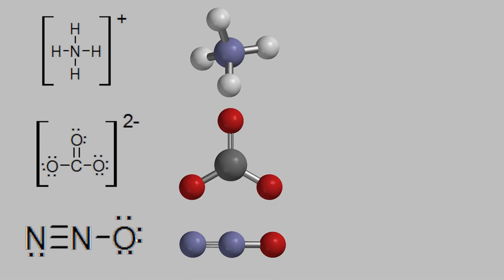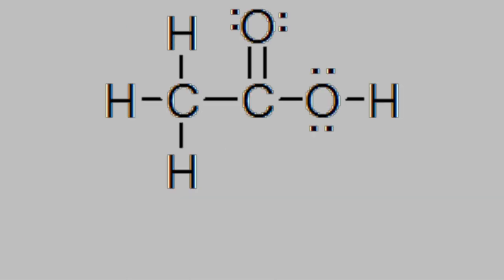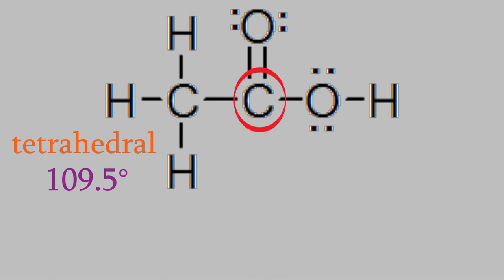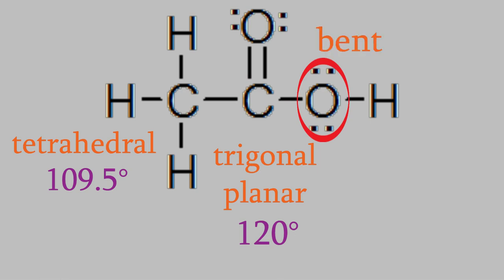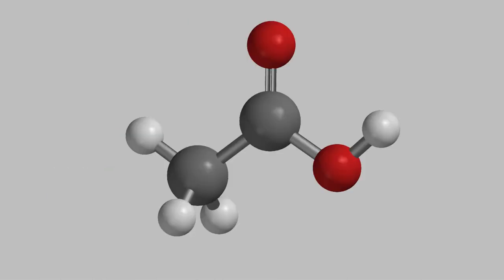We can use this to find the shapes of even larger molecules. For example, here's the Lewis structure of acetic acid. The molecule doesn't have a single central atom, but we can figure out the bond angles and shapes of every atom in the center of the molecule. This carbon has four bonds and no electron pairs, so the bonds are in a tetrahedral shape and the angles will be 109.5 degrees. The second carbon has three bonds and no electron pairs, so the bonds are in a trigonal planar shape with angles of 120 degrees. And finally, this oxygen has two bonds and two electron pairs, so the bonds are in a bent shape with a 109.5-degree angle between them. If you put all that together, you get a picture of the molecule showing the tetrahedral and trigonal planar carbons, and the bent oxygen.